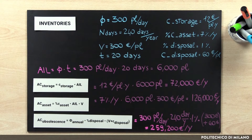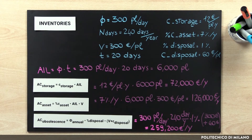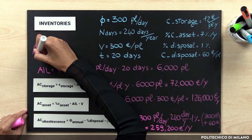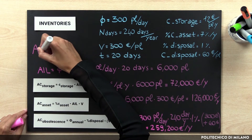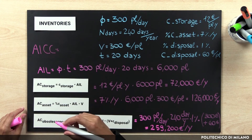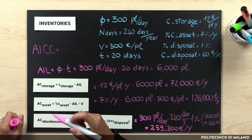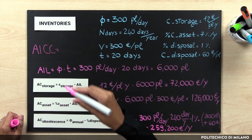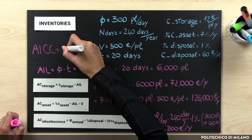In order to define the annual inventory carrying cost, we sum up the annual cost of storage, the annual cost of assets, and the annual cost of obsolescence. So we have an annual inventory carrying cost equal to 457,200 euros per year.